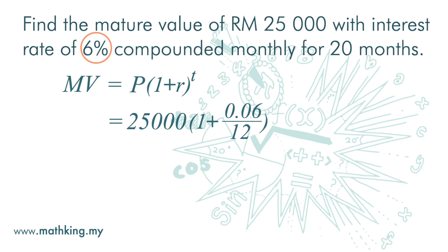And since we are compounding monthly for 20 months, the time period t here is 20. The matured value after 20 months is RM27,622.39.